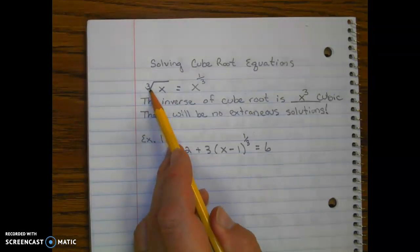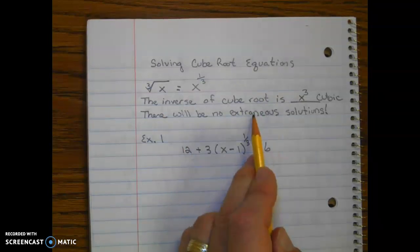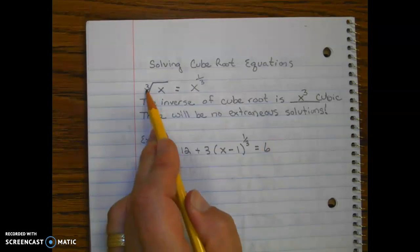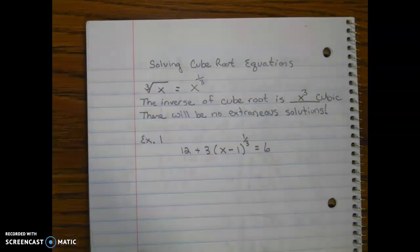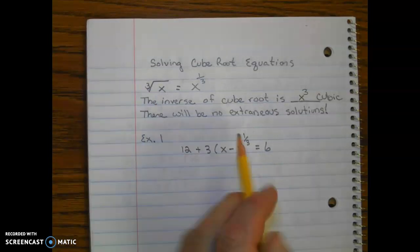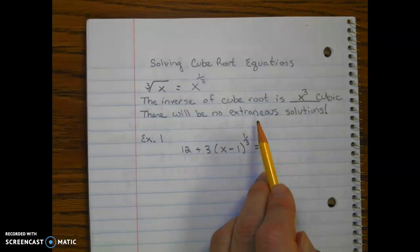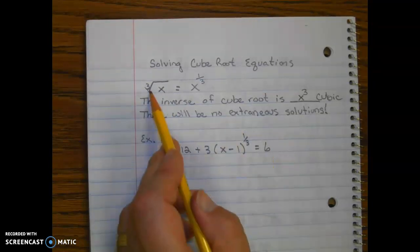With odd roots, there will be no extraneous solutions. The only time you get extraneous solutions is when the root is even. That's why in the previous square root examples we had to watch for extraneous solutions, but for cube roots, there are none.